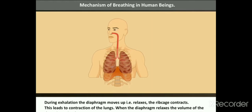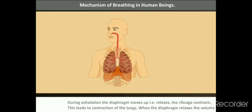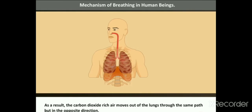When the diaphragm relaxes, the volume of the thoracic cavity decreases. As a result, the carbon dioxide-rich air moves out of the lungs through the same path, but in the opposite direction.